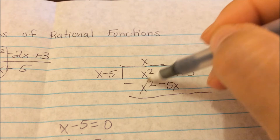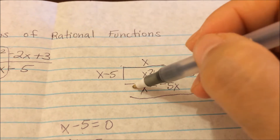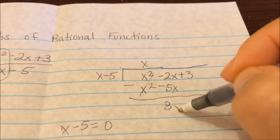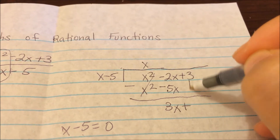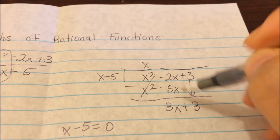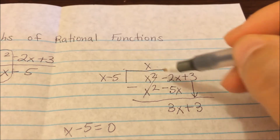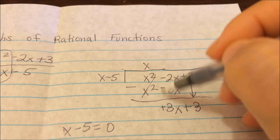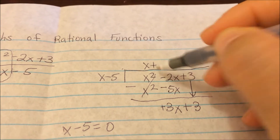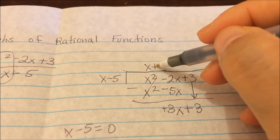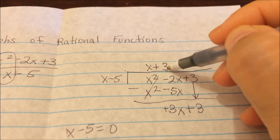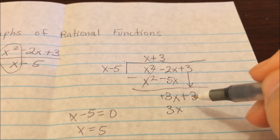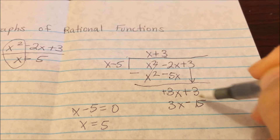We subtract, the x squared cancels out, and we have negative 2x minus a negative 5x, so that becomes plus 3x. Then drop down the 3, giving plus 3. Now x times something has to give us 3x. The clue is: if the term is positive, it's positive up in the quotient; if negative, it's negative. So the next term is 3. Then 3 times negative 5 gives negative 15.